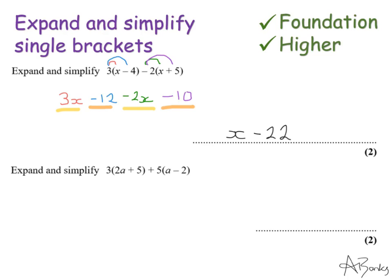The second question is a little bit more complicated. So we've got 3 times 2a that's 6a. We've got 3 times 5 that's 15 and then on my second bracket I have plus 5 times a that's plus 5a and then plus 5 times minus 2 which is minus 10.